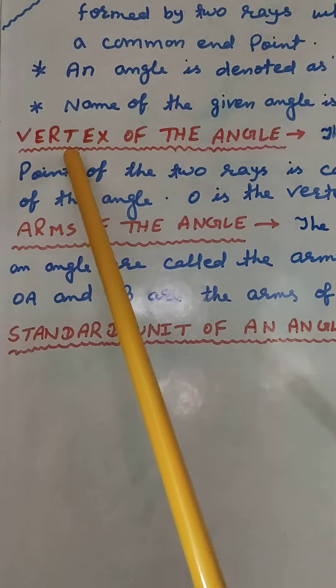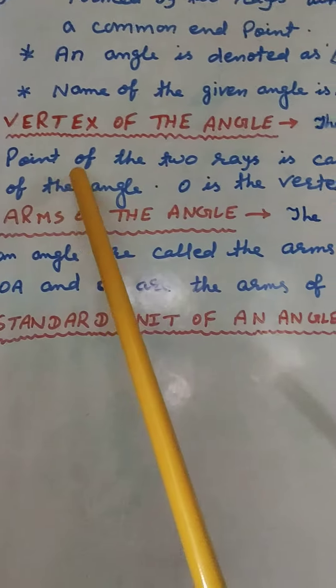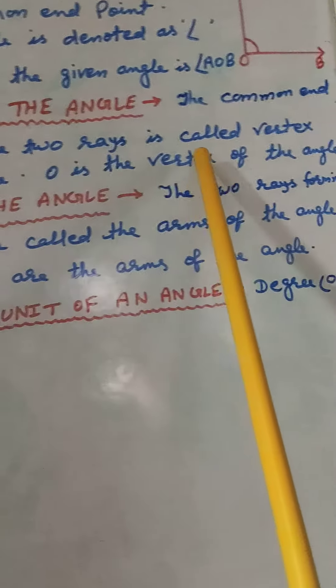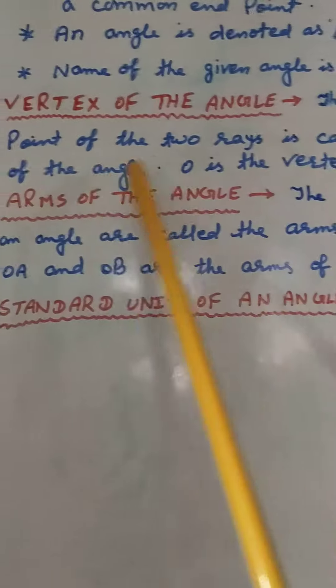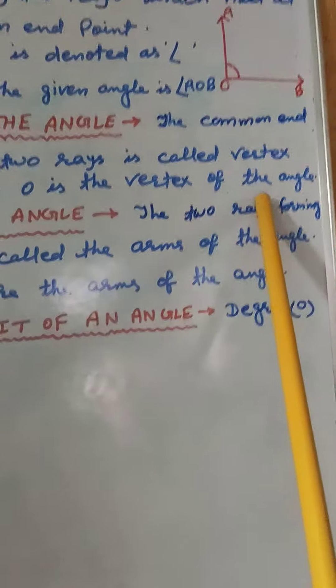Next. Vertex of the angle. The common end point of the two rays is called vertex of the angle. O is the vertex of the angle.